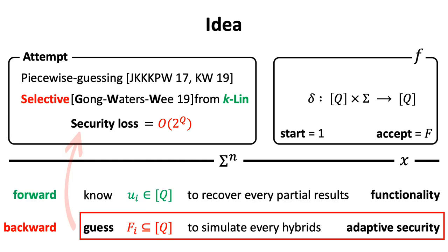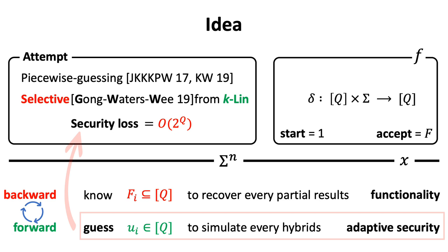Remember, we have two distinct ways to compute the DFA. Our idea is to switch the role of forward and backward computation. Namely, we will use forward computation for the adaptive security,